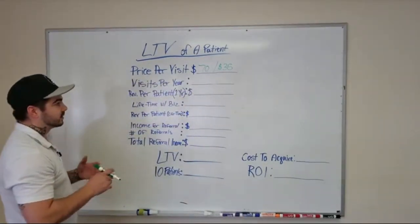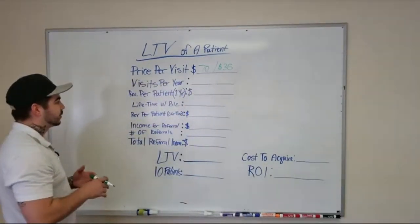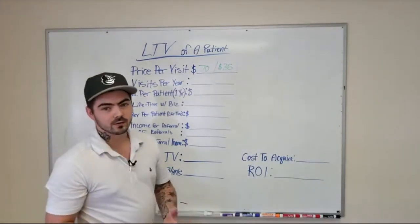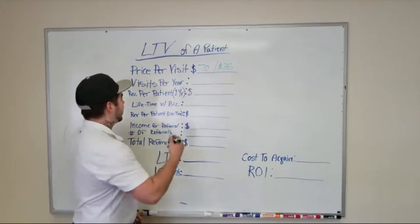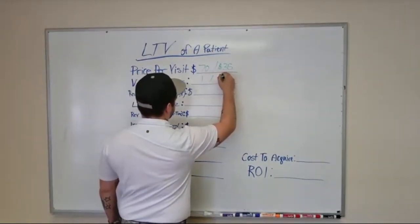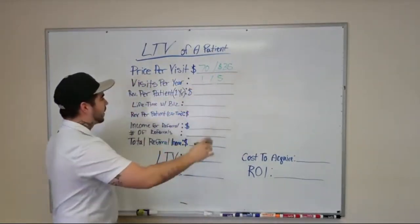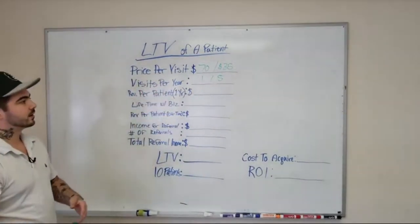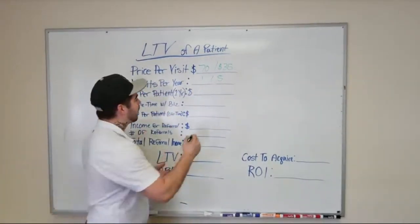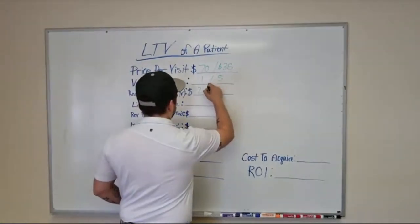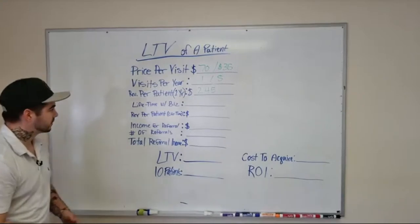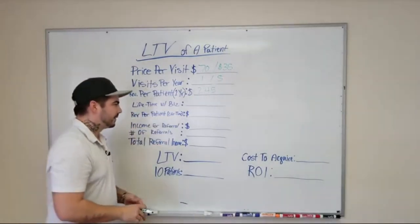I try to make it in as much as possible, but there are times I'm not around his practice. So if I go six times in a year — the first visit was $70 and every visit after that is $35 — for one year I'm worth $245 to him.